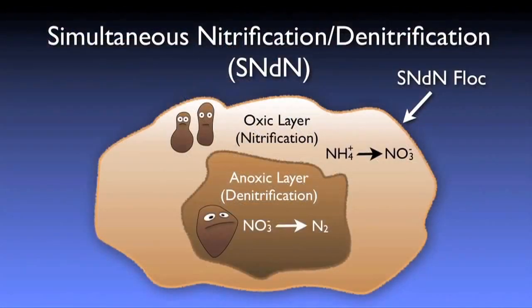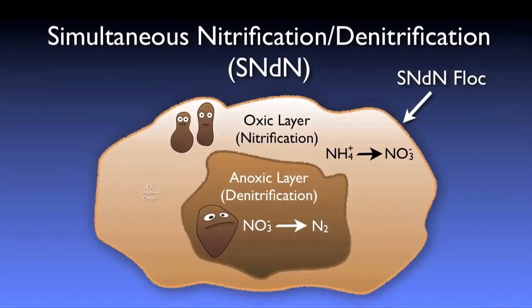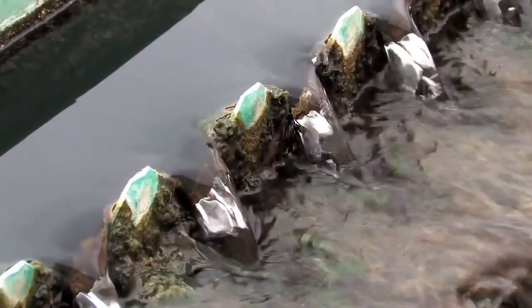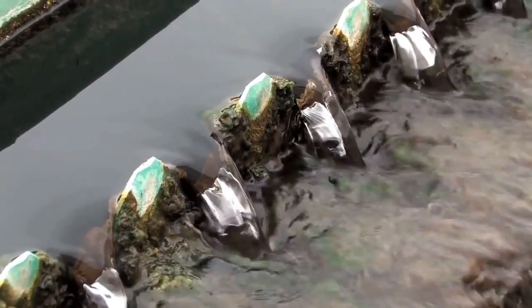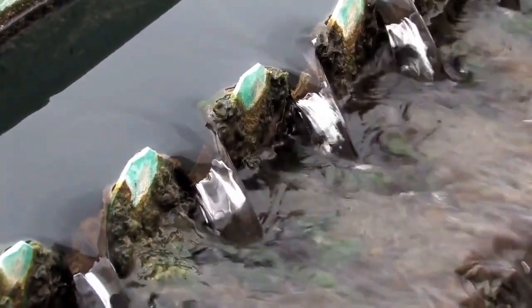Under certain conditions, micro-anoxic zones can be developed within the bacterial flocs themselves, resulting in what is referred to as simultaneous nitrification-denitrification. Various levels of denitrification may be required depending on the local discharge permit. However, full biological denitrification typically results in only 1–3 mg/L of nitrate in the effluent stream.